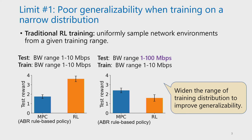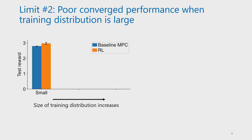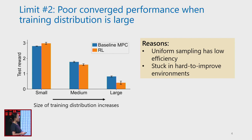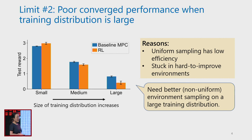You might wonder: why not just widen the training distribution to improve generalizability? Here we can increase the training range 10 times bigger. But this leads to the second limit: RL has poor convergence performance when the training distribution is large. The x-axis is training distribution size and the y-axis is testing reward. As training distribution increases, RL performance actually decreases a lot and becomes worse than the MPC baseline. The reasons are that uniform sampling has very low efficiency, and RL may get stuck in hard-to-improve environments. What we really want is better, non-uniform environment sampling over a large training distribution.